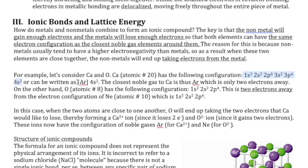Here's an example with calcium. You can write the electron configuration of calcium as [Ar] 4s². So if calcium were to lose those two 4s electrons, it would have the same electron configuration as argon. Oxygen has an atomic number of eight, so its electron configuration is 1s², 2s², 2p⁴. The closest noble gas to oxygen would be neon.